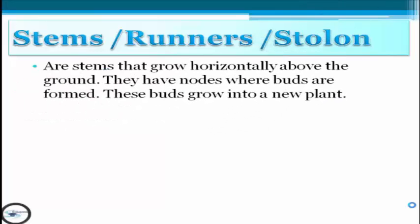The examples of natural vegetative propagation — we have four. The first one is stem runners or stolons. Runners are stems that grow horizontally above the ground. They have nodes where buds are formed, and these buds grow into a new plant.